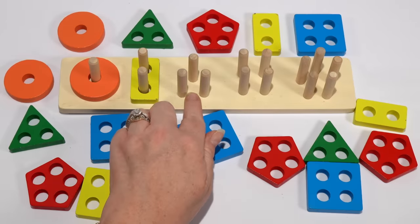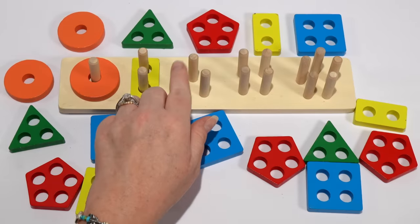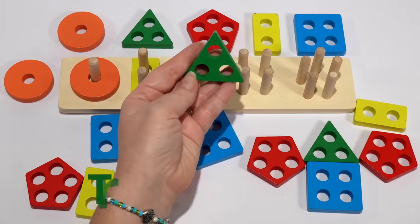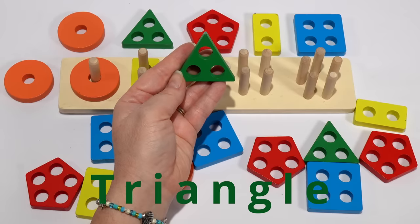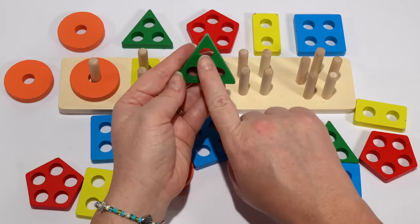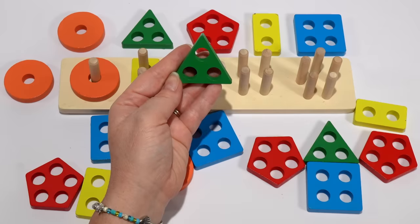Our next set has one, two, three pegs. We know what shape has only three holes. We just looked at it. It's our triangle. Our triangle is green and it has one, two, three holes.